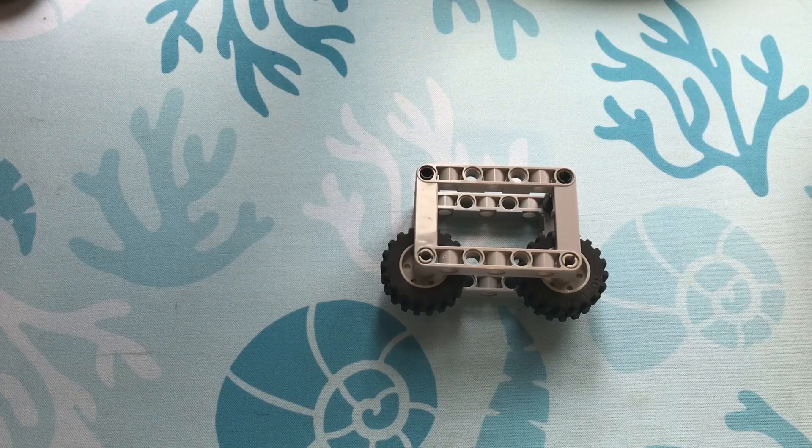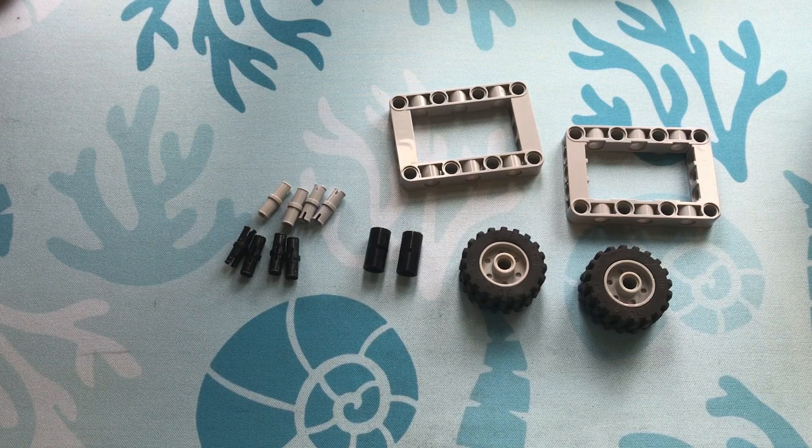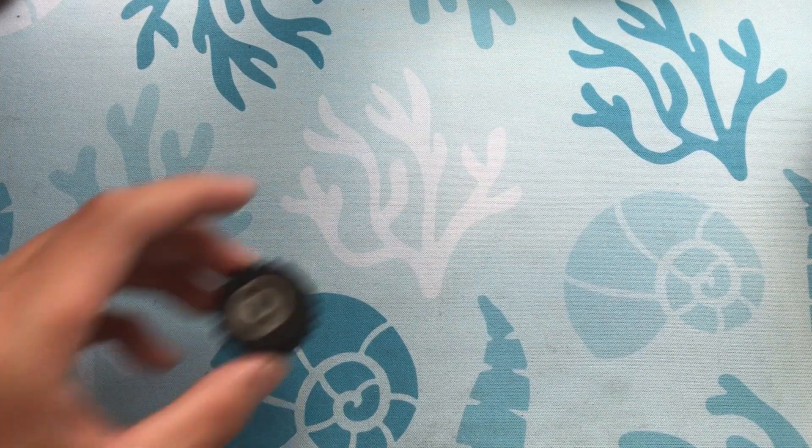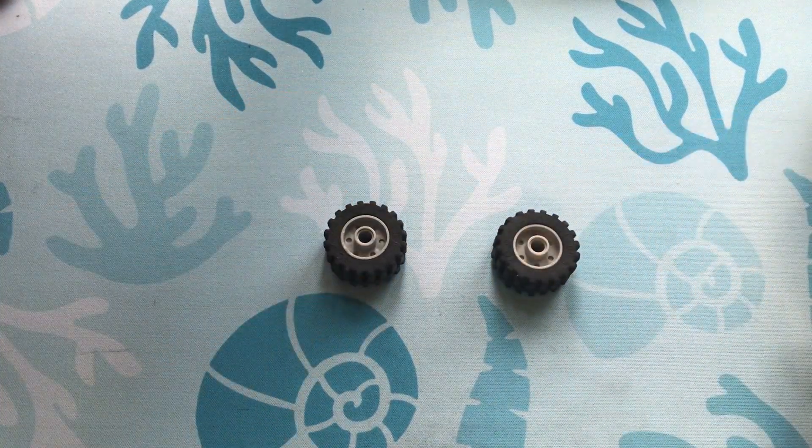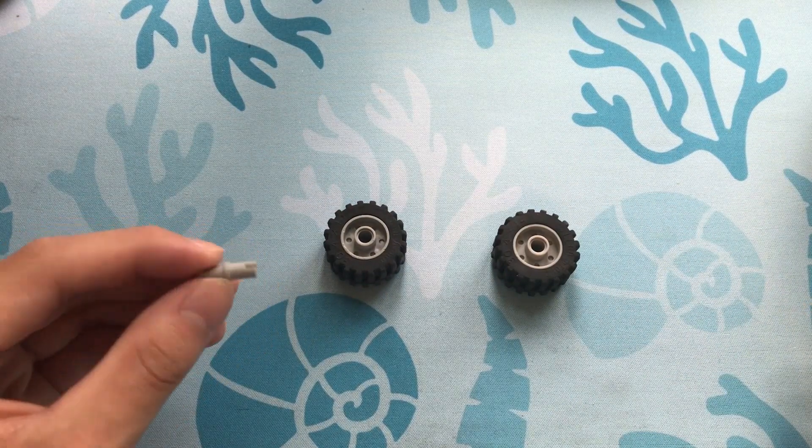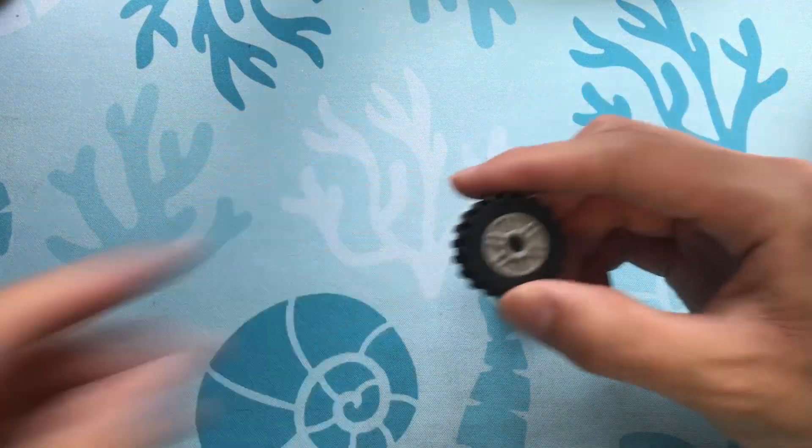Now let's build this wall follower. Here are the pieces we'll need. First, let's take our two wheels and take our four frictionless pins and put them onto each side of every wheel.